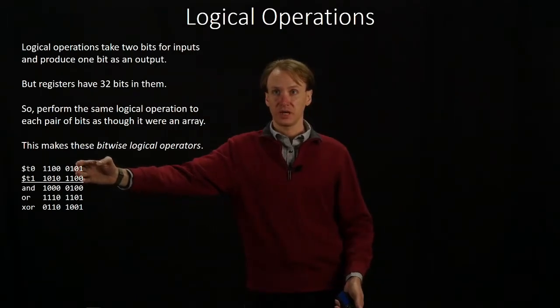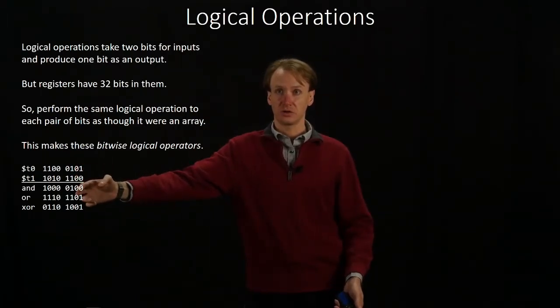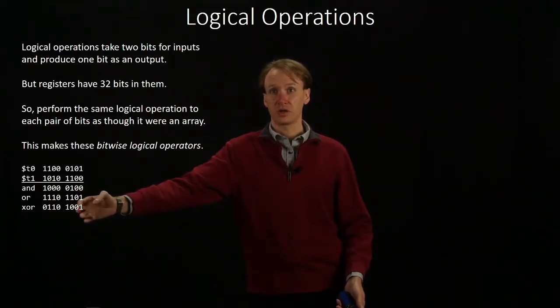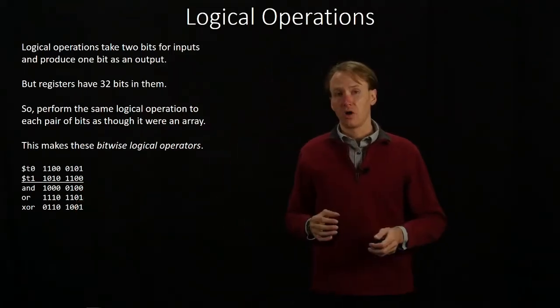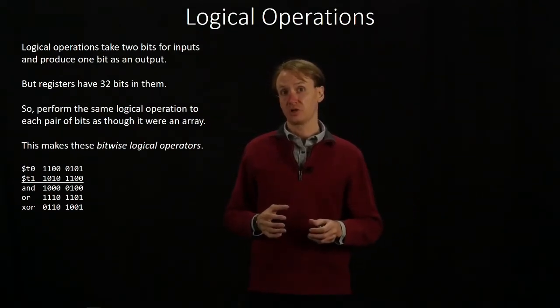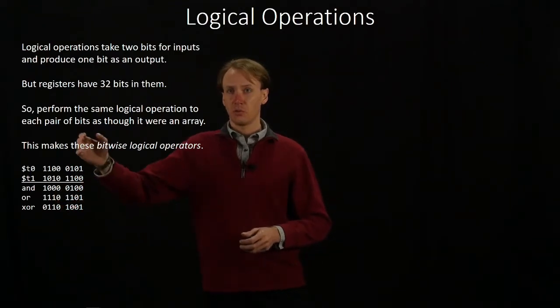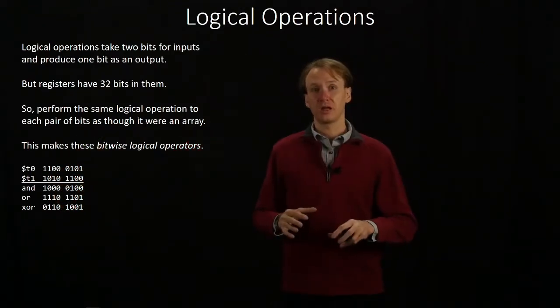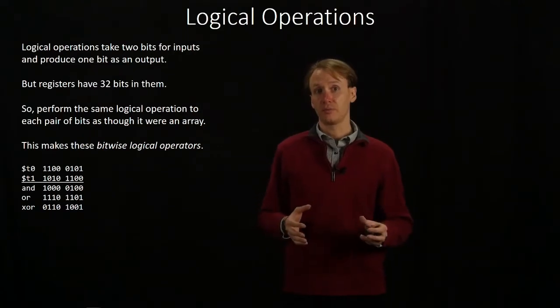The second column has 0 and 0 in it. So 0 and 0 is 0, 0 OR 0 is 0, and 0 XOR 0 is 0. All that these operations do is perform the same logical operation over each pair of bits. It will walk down each of the columns, make the comparisons, and there won't be any interaction between the columns.